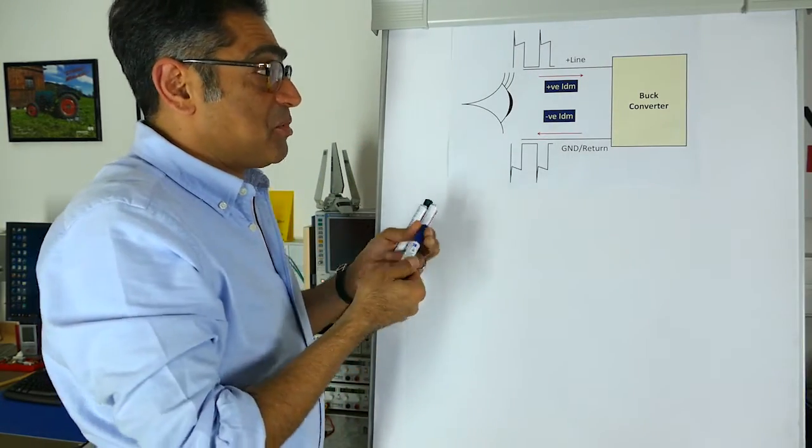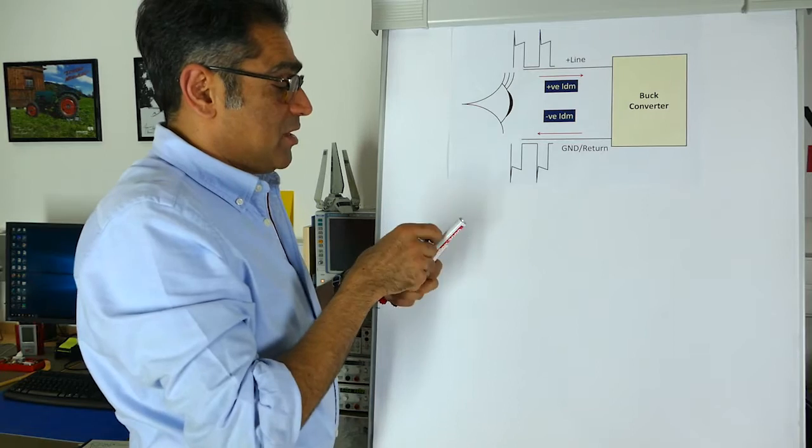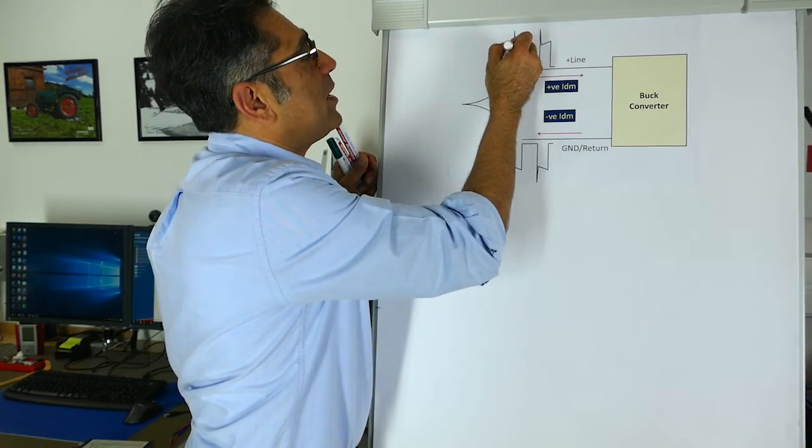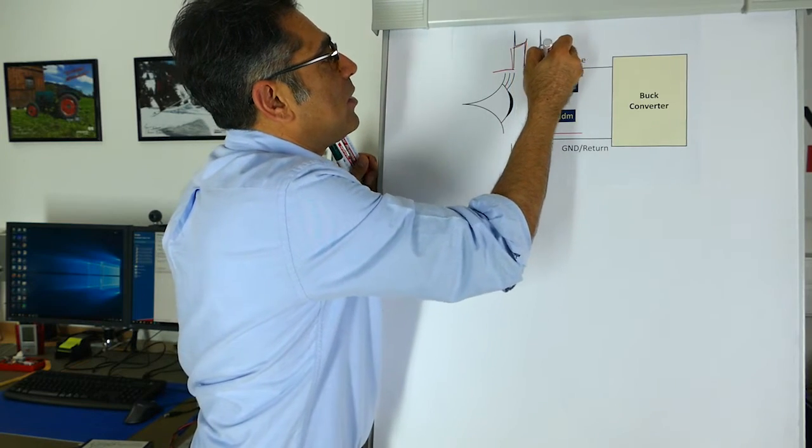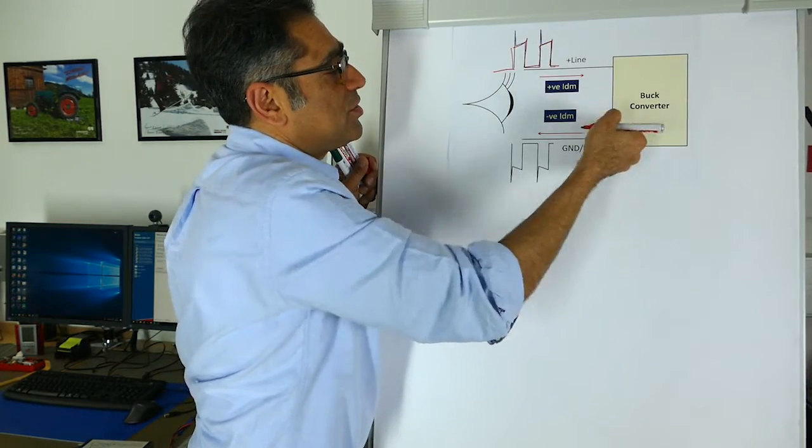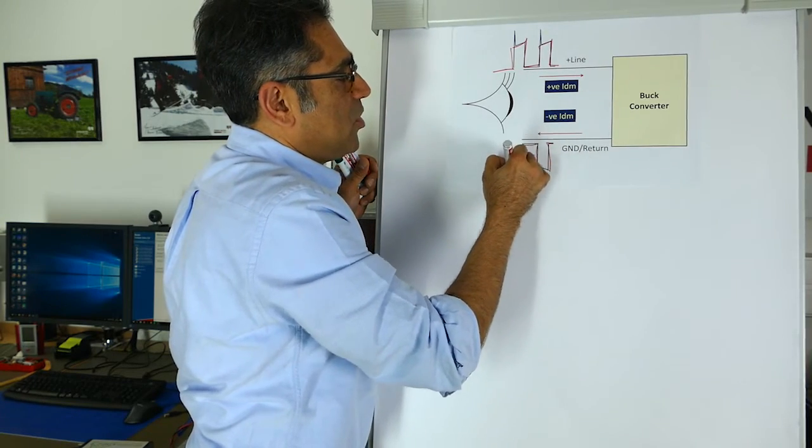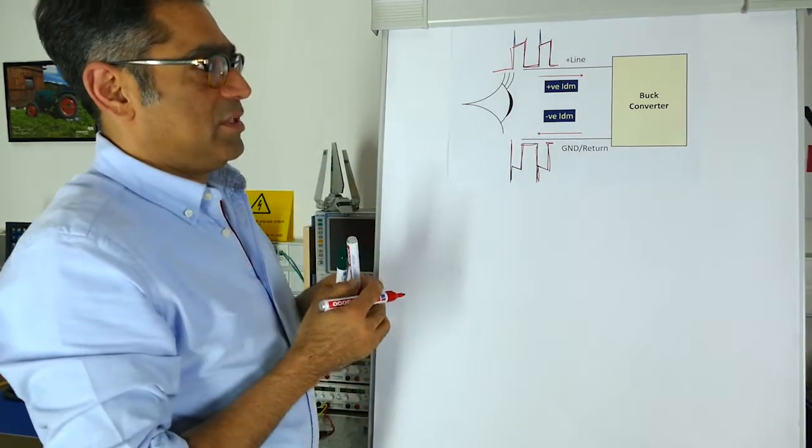For example, a power supply, let's say for simplicity a buck converter. What you have here is a current that is going in on the line, and on the return it will look the opposite. We're used to dealing with it all the time.